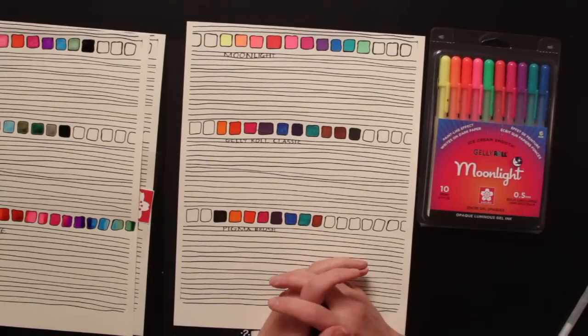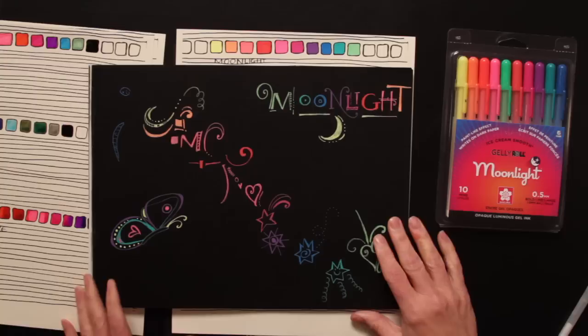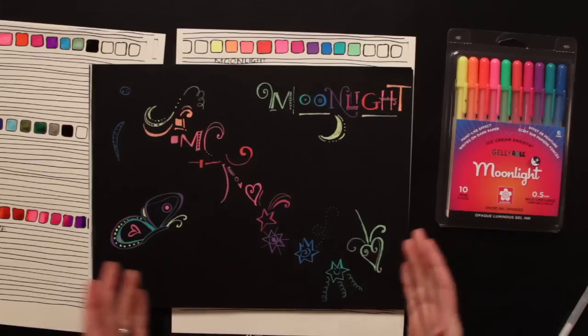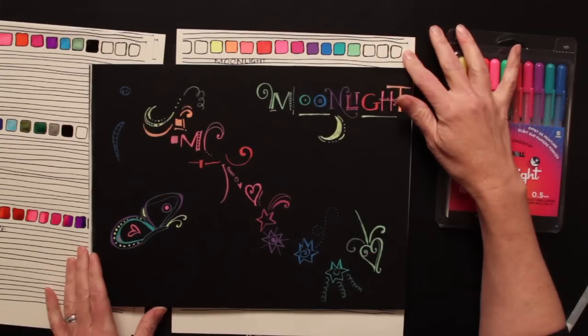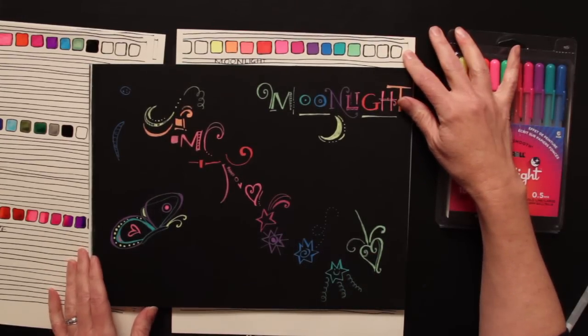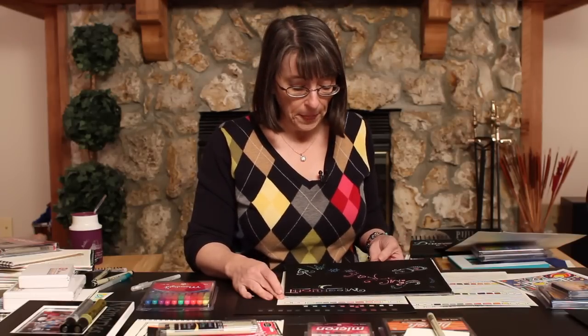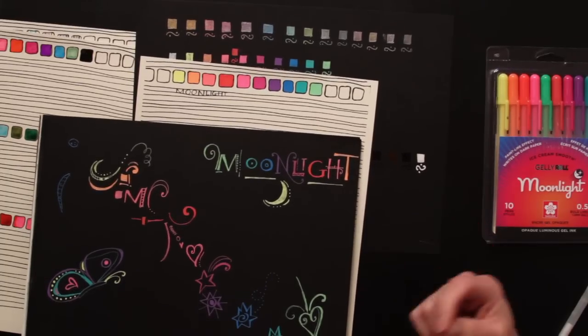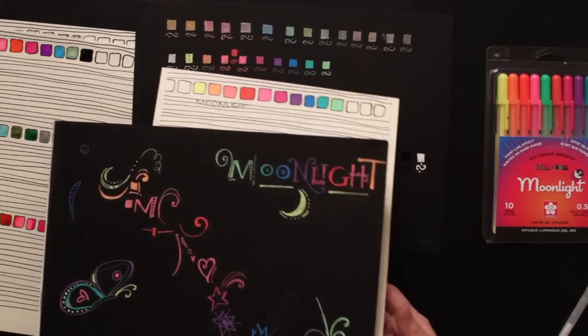These are the moonlights. They are awesome. They are my children's favorite tool. I try to write something with each of the different colors. But you can see that it's the same intensity for the moonlight, whether it's on light paper or dark paper. Really nice, vivid, vibrant colors. And I love the colors that Sakura has picked. They really work nicely together.